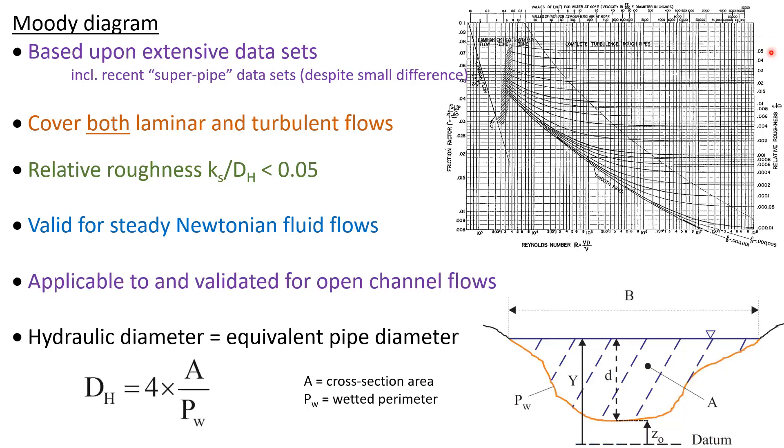It is applicable to and validated for open channel flow. In the definition of the relative roughness height and Reynolds number, the hydraulic diameter is the equivalent pipe diameter, defined as four times the cross-section area divided by the wetted perimeter.